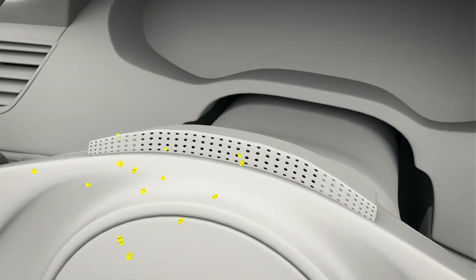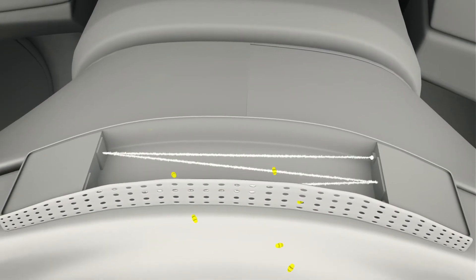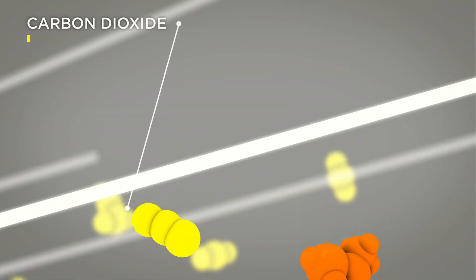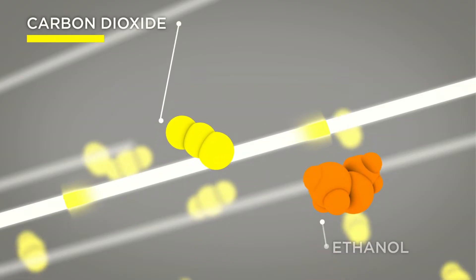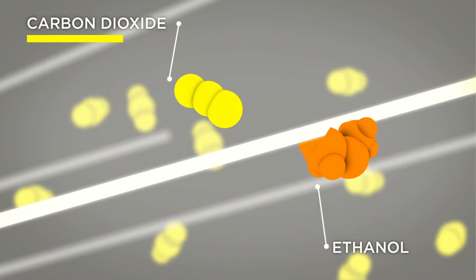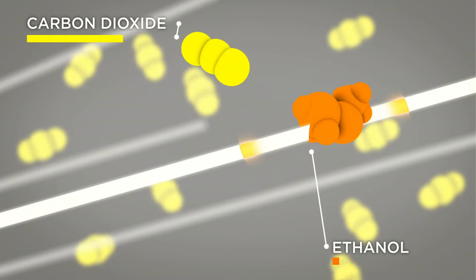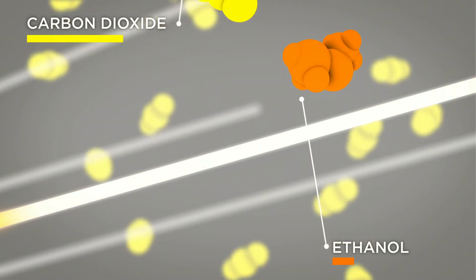A beam of infrared light is then directed at the molecules in the breath. Carbon dioxide and alcohol molecules absorb different amounts of light, and the sensor can compare the two, making it easy to measure alcohol levels precisely, even at very small concentrations.